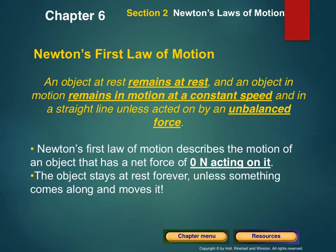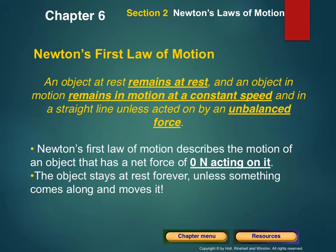The first law says that an object at rest remains at rest, and an object in motion remains in motion at a constant speed and in a straight line, unless acted on by an unbalanced force. There are no accelerations — it's going at a constant rate forever unless an outside force stops it. This tells us, thinking back to net force, that it describes what happens when an object has a net force of zero.